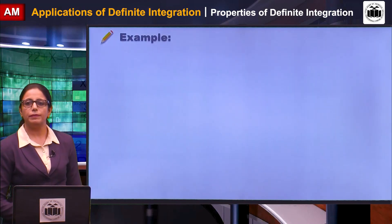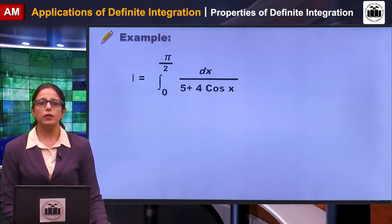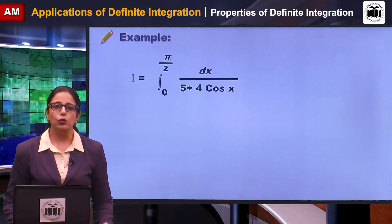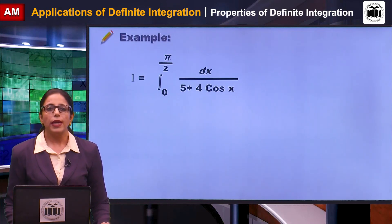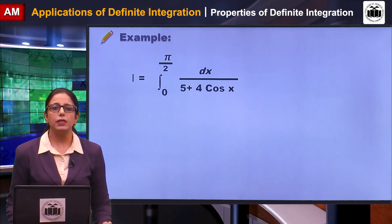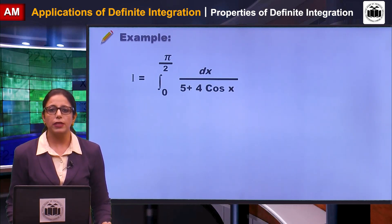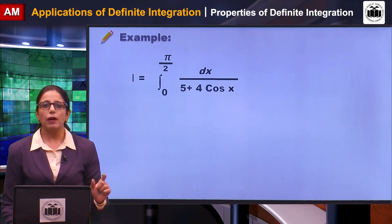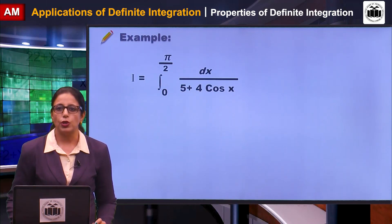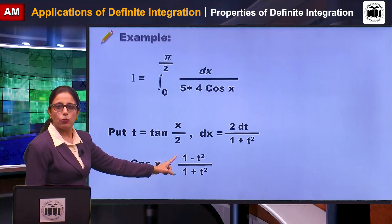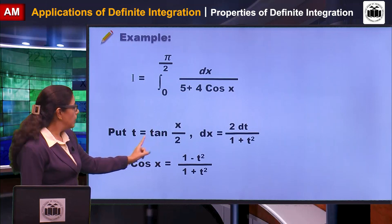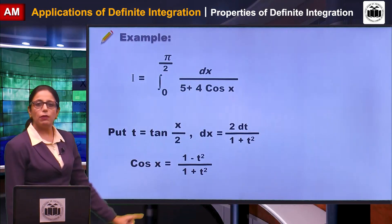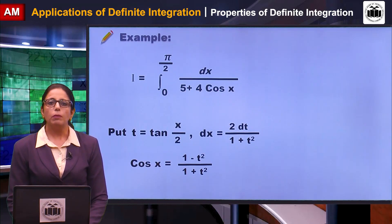Let us see another example. This is an important sum: integration from 0 to π/2 of dx/(5 + 4cos x). You may recall that integrals of the form 1/(a + b·cos x) or 1/(a + b·sin x) are solved by a fixed substitution: put t = tan(x/2). Using this substitution, dx is replaced by 2dt/(1 + t²) and cos x is replaced by (1 − t²)/(1 + t²).